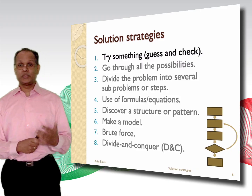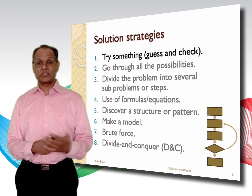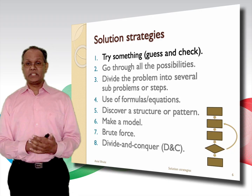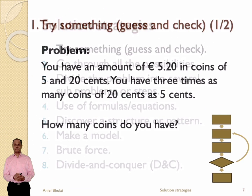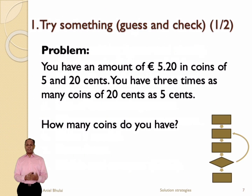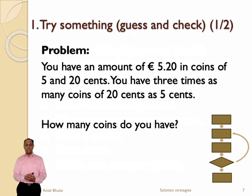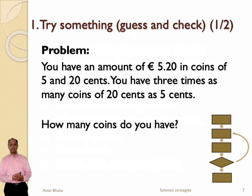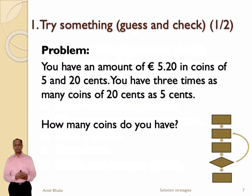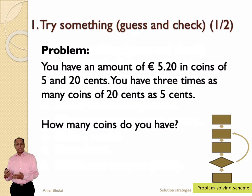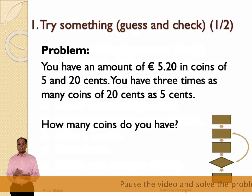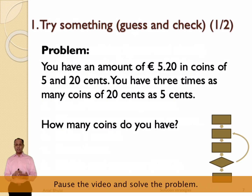Okay, let's start with the first solution strategy: the try something strategy, also known as guess and check. Now consider the following problem. Suppose you have 5 euro and 20 euro cents in coins of 5 cents and 20 cents, and you have three times as many coins of 20 cents as 5 cents. The question is: how many coins do you have? To solve this problem we will follow the problem-solving scheme. I suggest you pause the video now and try to solve the problem with the guess and check strategy, also following the scheme we discussed.